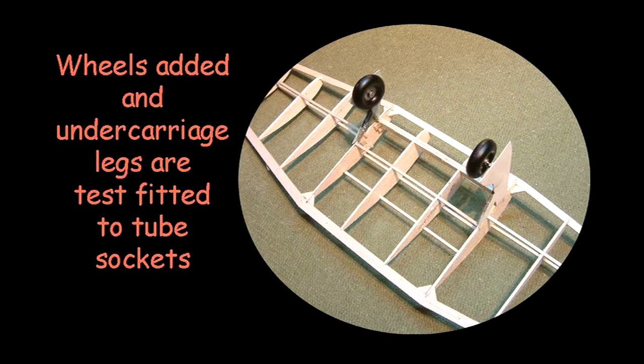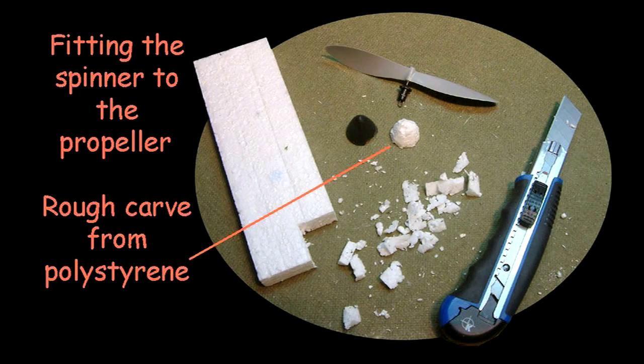The propeller spinner is supplied as a simple black plastic shell. This will need to be carefully fitted to the propeller. To do this,